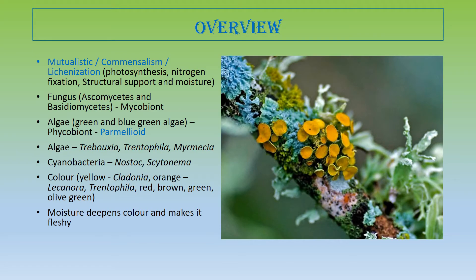Lichen contains a phycobiont partner — that is the photosynthetic partner, algae — and the mycobiont partner, that is the fungus. Among the mycobiont partner, mostly lichens contain ascomycetes, and very rarely basidiomycetes. Among the algal partner, it contains both green and blue-green algae.